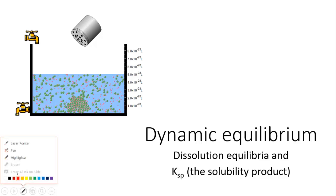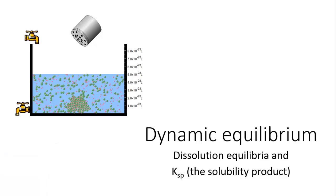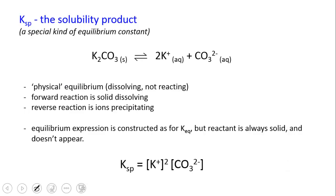In this video we're going to look at a very particular kind of equilibrium: the equilibrium set up when ionic compounds or salts dissolve in water. Up until now we've been talking about equilibria defined by their equilibrium constant K_eq. When we specifically talk about things dissolving, we give the equilibrium constant a special name called K_sp, where SP stands for solubility product — specifically for situations where something is dissolving and precipitating in solution.